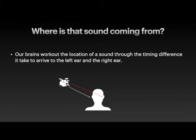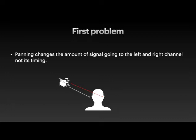So here's the first problem with traditional panning — where is the sound coming from? The way our brain works out the location of a sound is through the timing difference between it arriving at the left ear versus the right ear. For example, a drum kit located far away on the left will hit our left ear milliseconds before the right, and our brain decodes that timing difference to tell us its location. The problem is that the traditional panning pot changes the amount of signal going to the left and right channels — changing the volume — but not its timing. So it doesn't replicate how our brain actually decodes sound location.